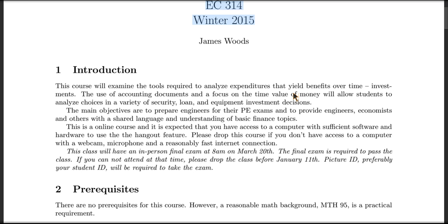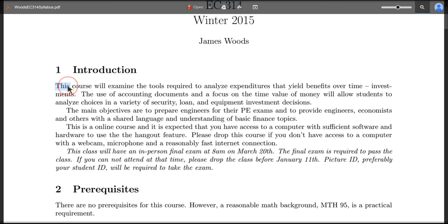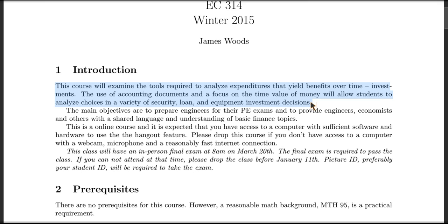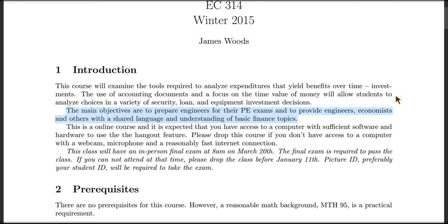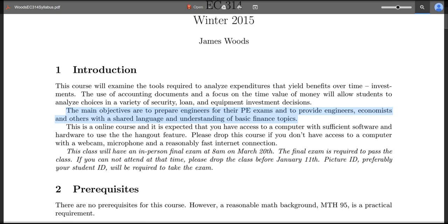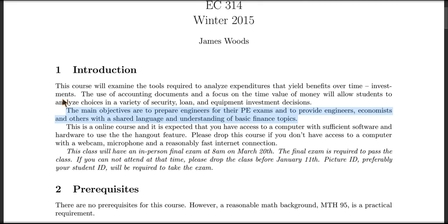The first paragraph in the introduction is intended to be a duplication of the description you're going to see in the bulletin, and it is technically correct. We're going to be looking at investments, which are things which provide benefits over time, but the second paragraph is really what I'm aiming for. I want to make sure that every engineer who takes this, who has to take the FE and PE exams, passes that really small fraction that has to do with engineering economics. For most engineers in Oregon, this is a requirement — it's not true for computer engineering, but everyone else has to take a class like this. It's there by law.